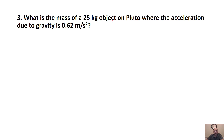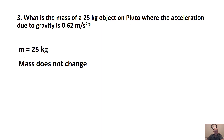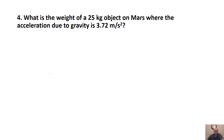What's the mass of a 25-kilogram object on Pluto where the acceleration due to gravity is 0.62 meters per second squared? This is a trick question — mass doesn't change. The mass will still be 25 kilograms.